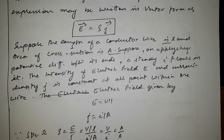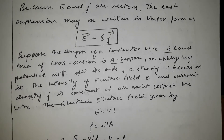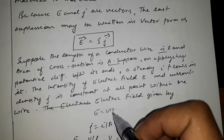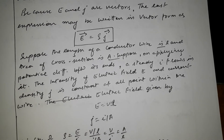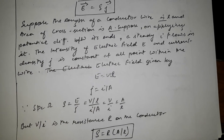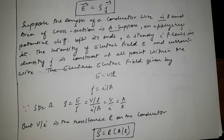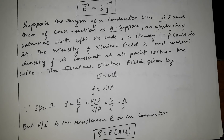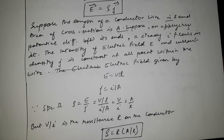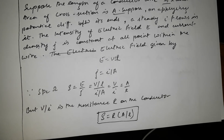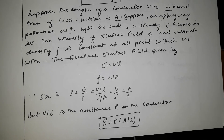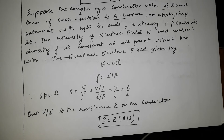Then electric field is given by E equals V by l, and therefore J equals I by A. Therefore, specific resistance rho equals E by J, which equals (V/l) divided by (I/A), which becomes V·A divided by I·l. But V by I is the resistance R of the conductor.